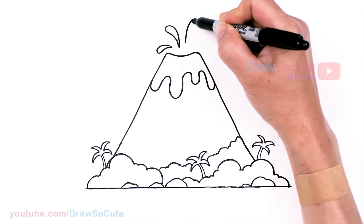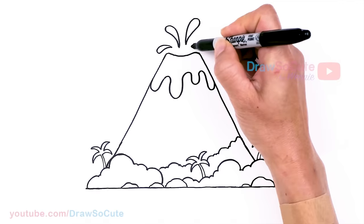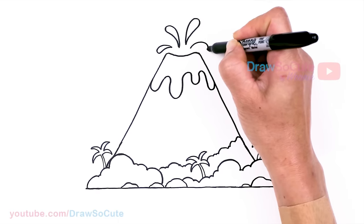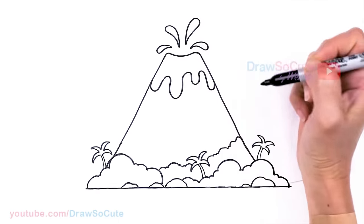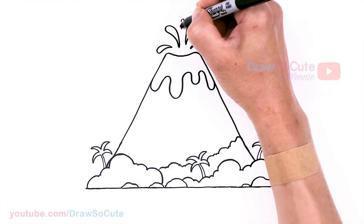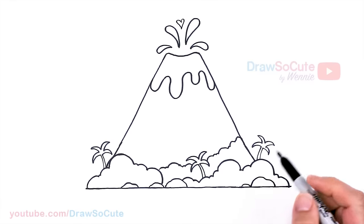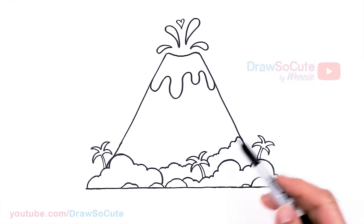And of course I can't resist, I'm going to put a heart right here coming out. Then from there, that is pretty much it if you wanted to just draw a normal volcano, of course without the heart. But today it's a DrawSoCute volcano that's saying 'I lava you,' right?